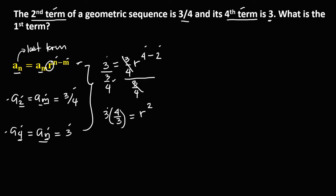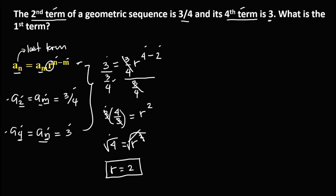Simplify: 3 times 4 over 3 — cancel the 3 — equals 4, so we have 4 equals r to the power 2. Solve for the common ratio by taking the square root, so r equals the square root of 4, which is positive 2. Therefore the common ratio is positive 2.